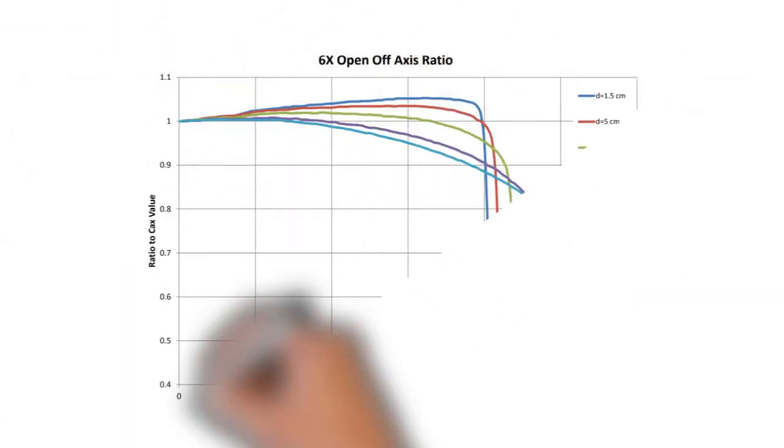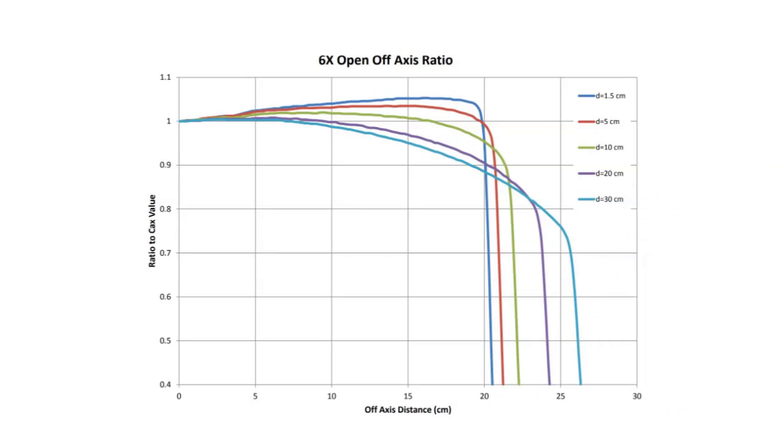So here's some example profiles. We have five different profiles here at five different depths. We have 1.5, 5, 10, 20, and 30. This is for a 6x beam. And you can very clearly see the presence of beam horns at those shallower depths, but as you move down or deeper in the phantom, those beam horns actually tend to disappear.